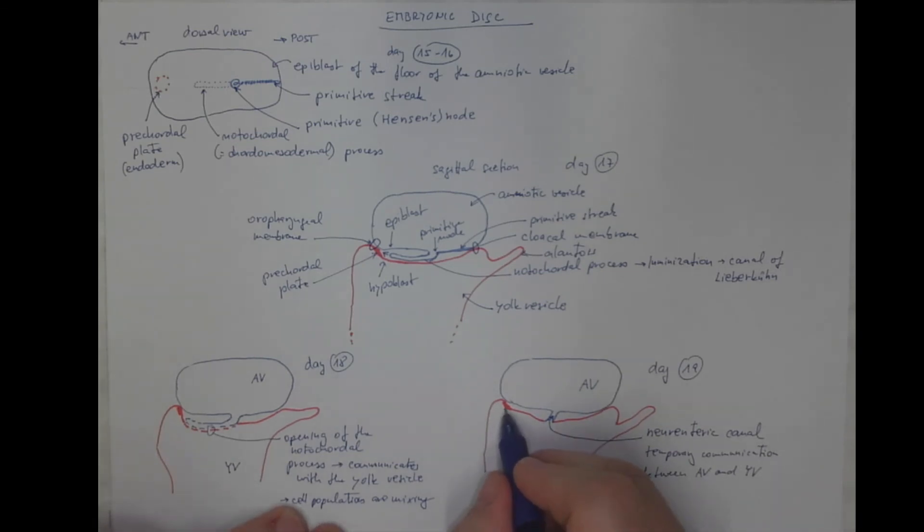Okay, this is the precordial plate and the oropharyngeal membrane and cloacal membrane. In the next stage, we will see how the notochord will evolve and the three layers of the gastrula will be established.